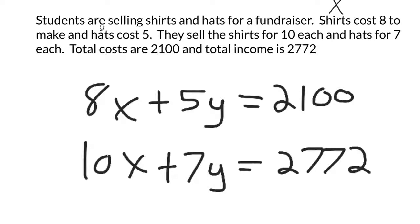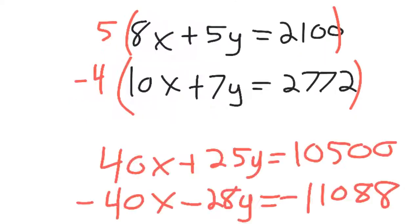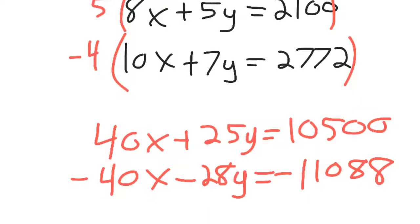So to solve this system, it's kind of set up for elimination because the X's and the Y's are stacked on top of each other. So I'm going to multiply the top equation by 5, and the reason for that is because 8 times 5 makes 40. And I know that 4 times 10 will make 40. And I'm going to actually multiply the bottom by negative 4 because sometimes we forget to subtract a negative. It's just easier if one's positive 40X and one's negative 40X. So that's what you get when you multiply the equation out.